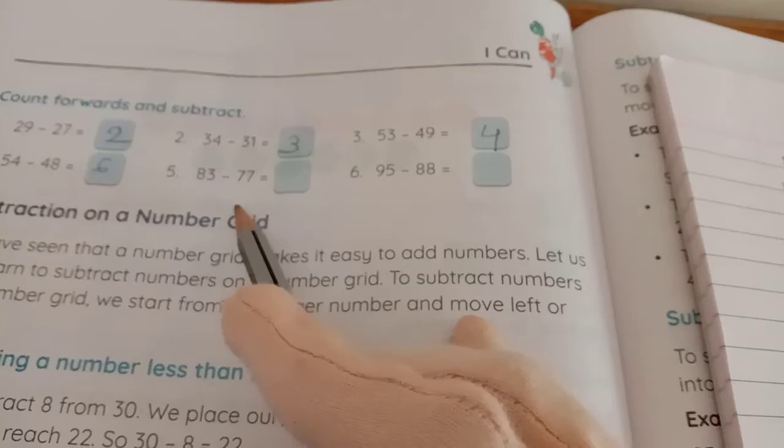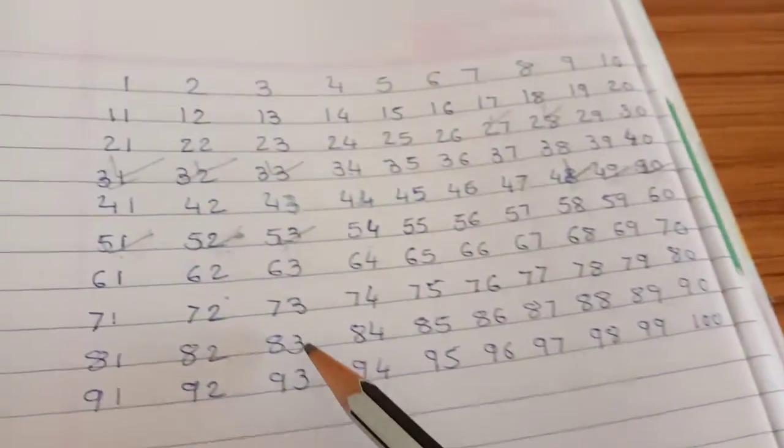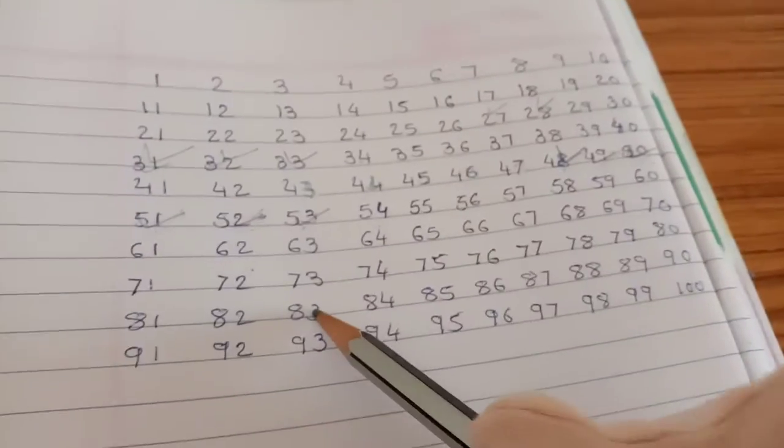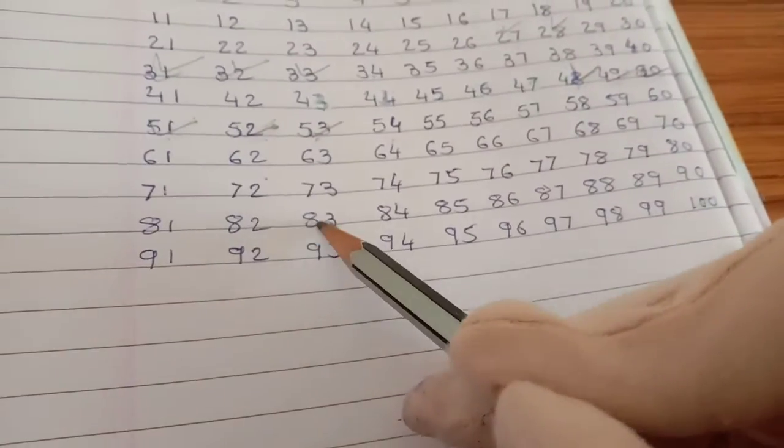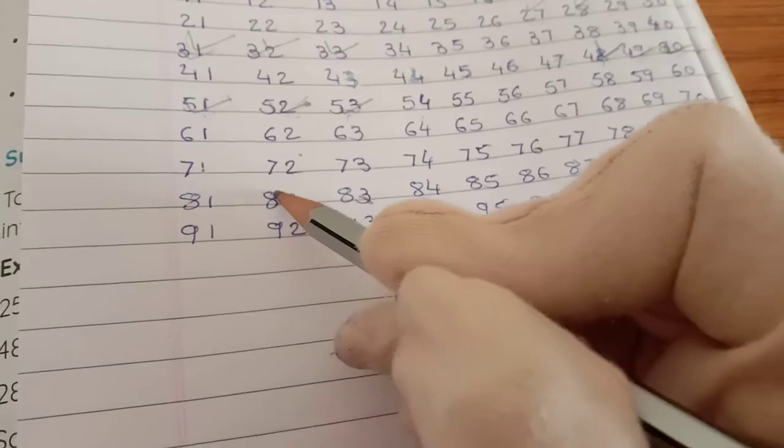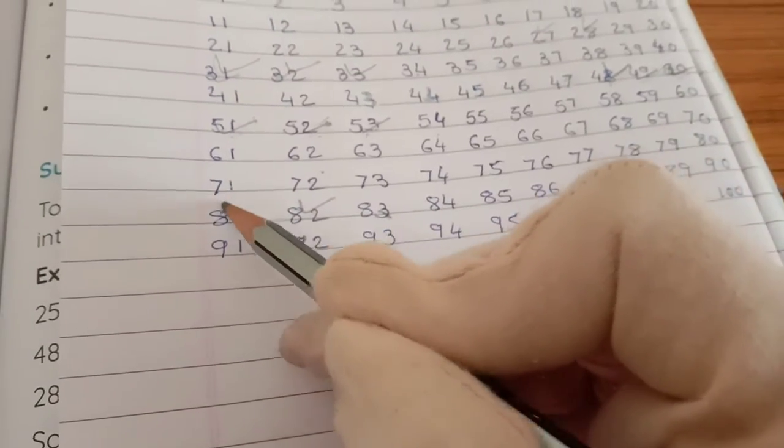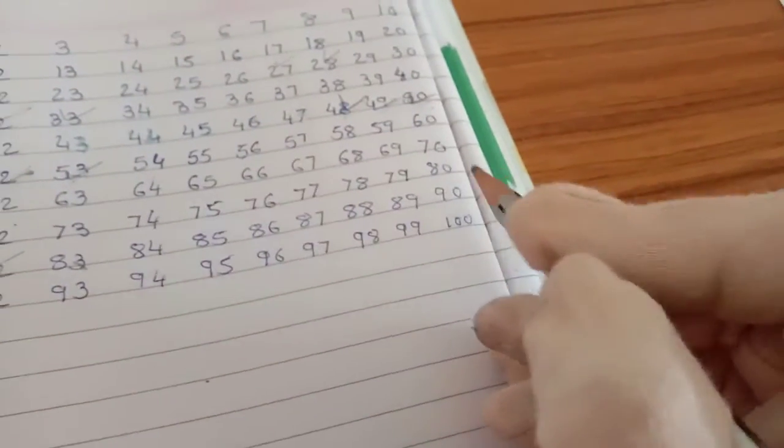Now next 83 minus 77. So we have to start 83 and go back from 77. So 83, then we have to go back 82, 81, 80,